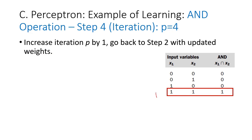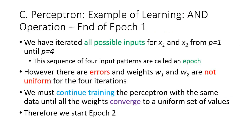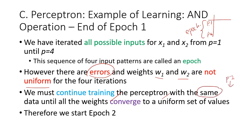We are done with p=4 and go back to step 2 with the updated weights. Our training data has only four iterations, so we have completed all possible inputs from p1 to p4. This sequence of four input patterns is called an epoch. However, there are still errors and the weights are not uniform across the four iterations, so we must continue training with the same data p1 to p4 until all weights converge to a uniform set of values. Therefore we start epoch 2.